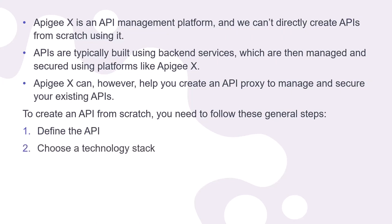Next, choose the technology stack. Select a programming language, framework, and database suitable for your API. Common choices include ASP.NET Core with C#, which is a very powerful tool for creating RESTful HTTP web APIs. Other options include Java with Spring Boot, Node.js with Express, Python with Flask or Django, and Ruby with Rails.